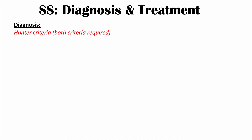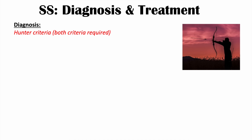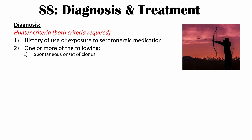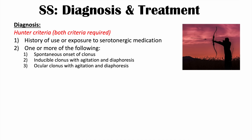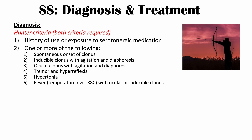Clinicians use several diagnostic criteria to diagnose serotonin syndrome; one commonly used set is Hunter criteria. Two criteria must be met: first, a history of use or exposure to a serotonergic medication; and second, one or more of the following — spontaneous clonus, inducible clonus with agitation and diaphoresis, ocular clonus with agitation and diaphoresis, tremor and hyperreflexia, hypertonia, or fever over 38°C with ocular or inducible clonus. A limitation is that this criteria may only detect more severe cases.